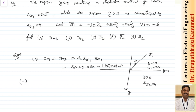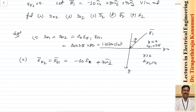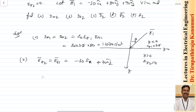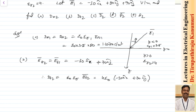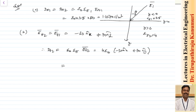For part two, we calculate Dt2. We know Et2 equals Et1, which equals minus 30 Ax plus 70 Az — the tangential components being x and z since y is the normal axis. Then Dt2 equals epsilon naught times epsilon r2 times Et2 equals 4 epsilon naught times (minus 30 Ax plus 70 Az). The magnitude works out to 2.697 nano coulombs per meter squared.